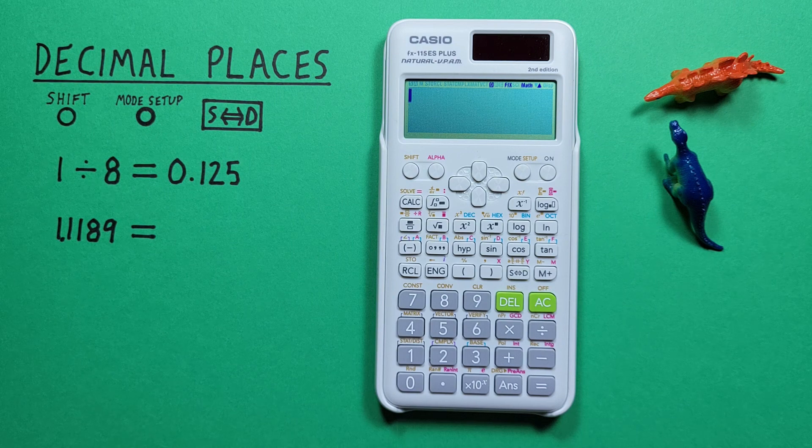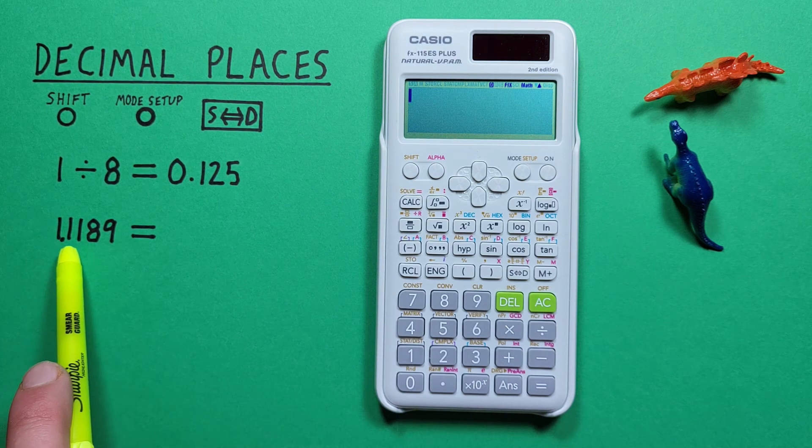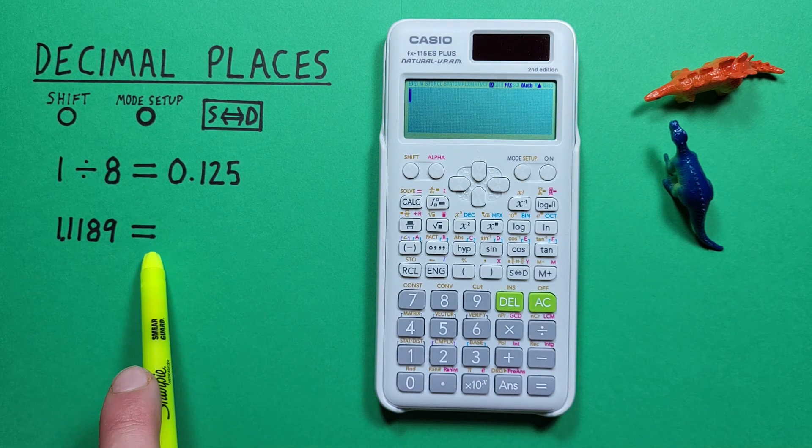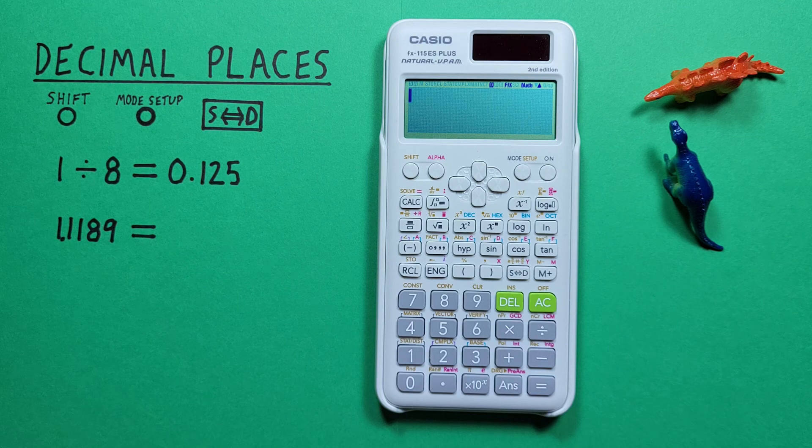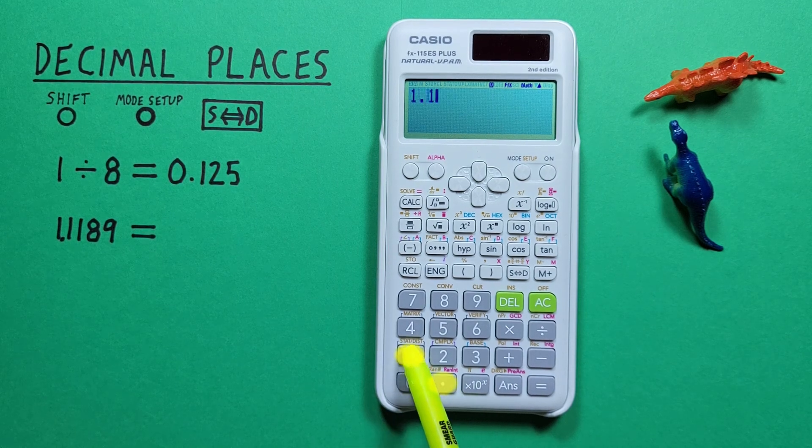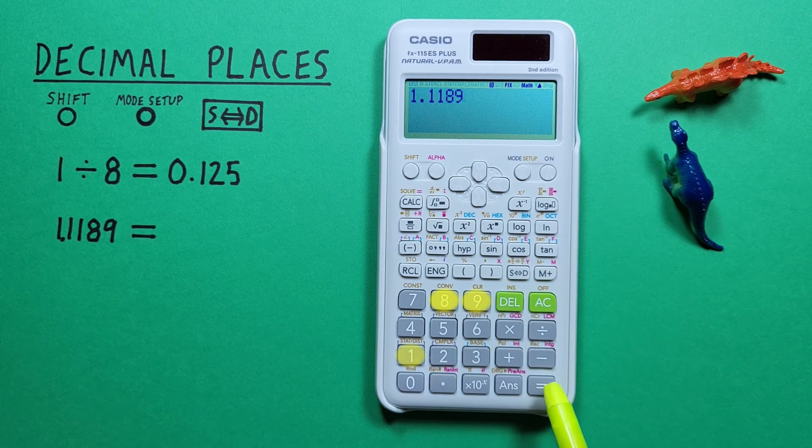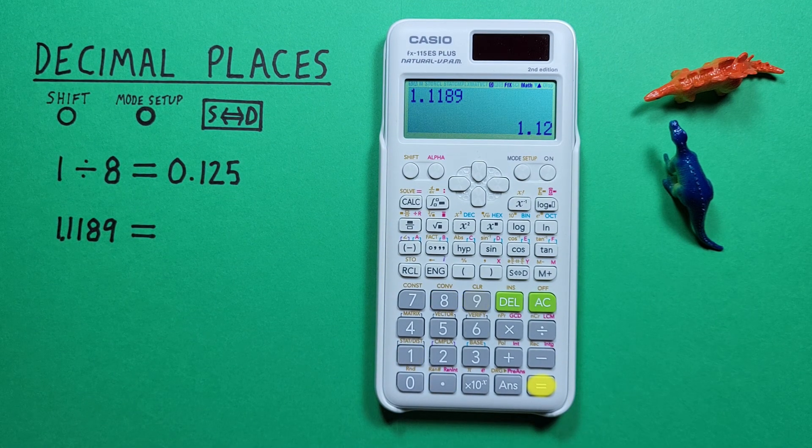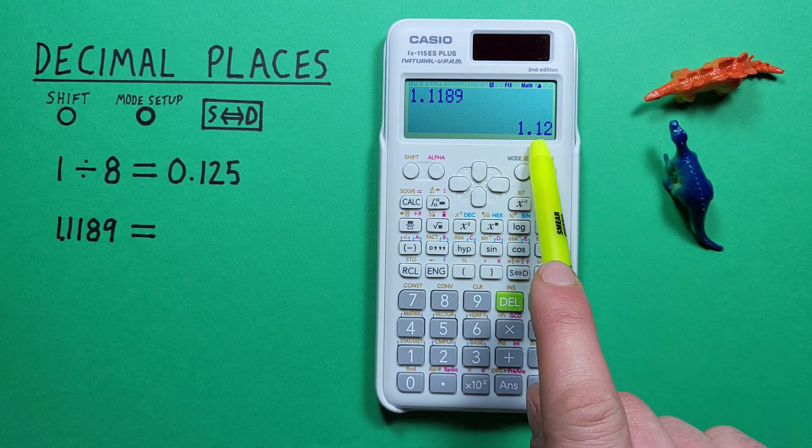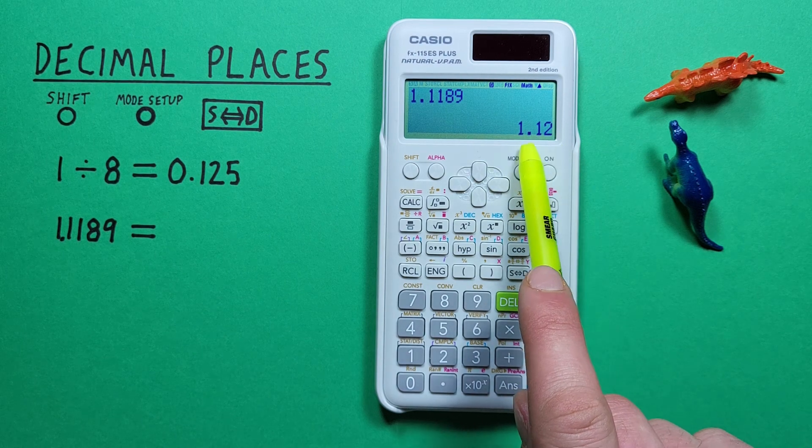Another example: what if we wanted to round 1.1189 to two decimal places? Again we just enter it on our calculator and press equals. And see we've rounded our number to two decimal places at 1.12.